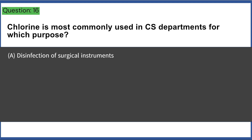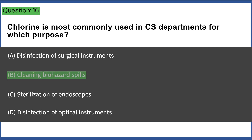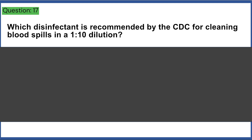Chlorine is most commonly used in CS departments for which purpose? a) disinfection of surgical instruments, b) cleaning biohazard spills, c) sterilization of endoscopes, d) disinfection of optical instruments. Answer: B, cleaning biohazard spills.